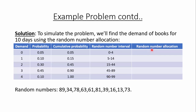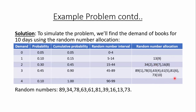Now we need to identify the random number allocation. We will see that the given random numbers in the problem fall in which random number interval. The first random number is 89, which falls between 45 to 89, showing that day 1 has a demand of 3 books. The second random number is 34, which falls between 15 to 44, suggesting day 2 has a demand of 2 books. The third day has random number 78 which falls between 45 to 89, so the demand for day 3 is 3 books. We find the random number allocation for all remaining days similarly.